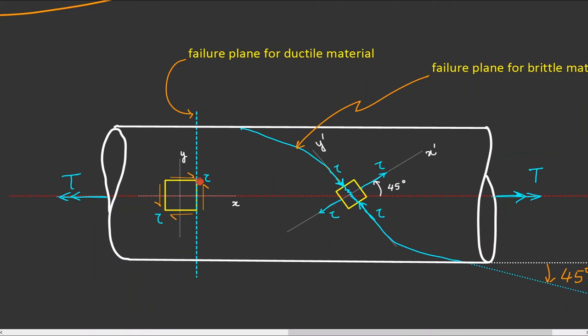Juxtaposing these two elements on a shaft subjected to pure torque: the first element under pure shear has X and Y axes. Rotating this element by 45 degrees gives the second element subjected to tensile stresses along axis X' and compressive stresses along axis Y'. The magnitude of the tensile and compressive stresses are exactly the same as the pure shear magnitude acting on the original stress element.